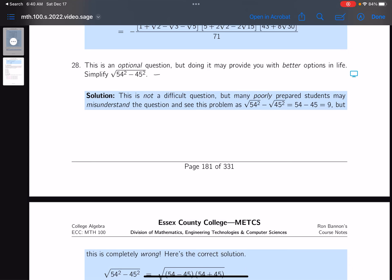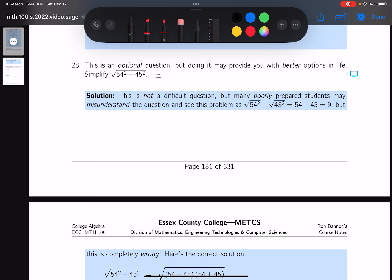A lot of students looking at the problem would probably write this down, which is incorrect. The square root of 54 squared minus the square root of 45 squared. Well, that would be 54 minus 45, which is equal to 9.